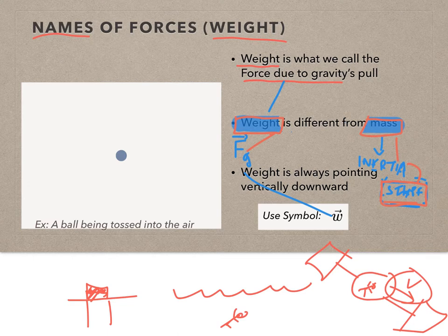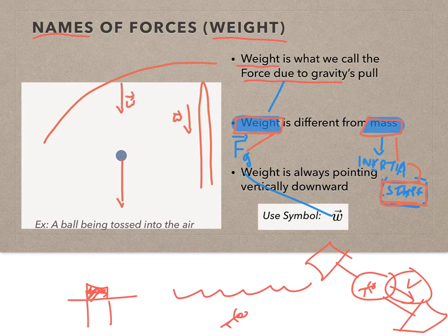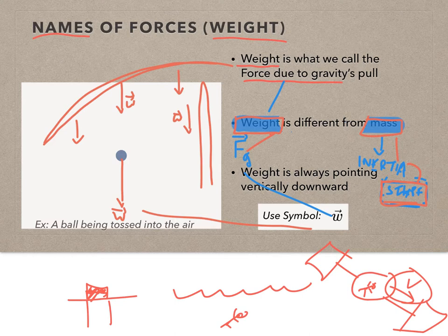Weight always points downwards. Whether I toss a ball straight up into the air in free-fall motion, or along a projectile path, every instant along the way my weight is always going downwards — always down. Whether it's a straight up-and-down path or a projectile motion path, weight is always going down.